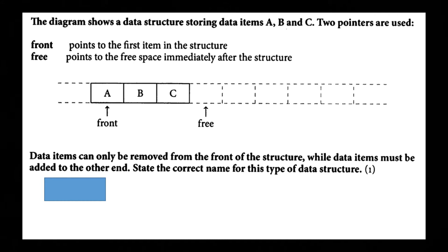The diagram shows a data structure storing data items A, B and C. Two pointers are used the front which points to the first item in the structure and free points to the free space immediately after the structure. A is front of the pointer and free is after C as that is where the free space is. Data items can only be removed from the front of the structure while a data item must be added to the other side state the correct name of a data structure and it is a queue.